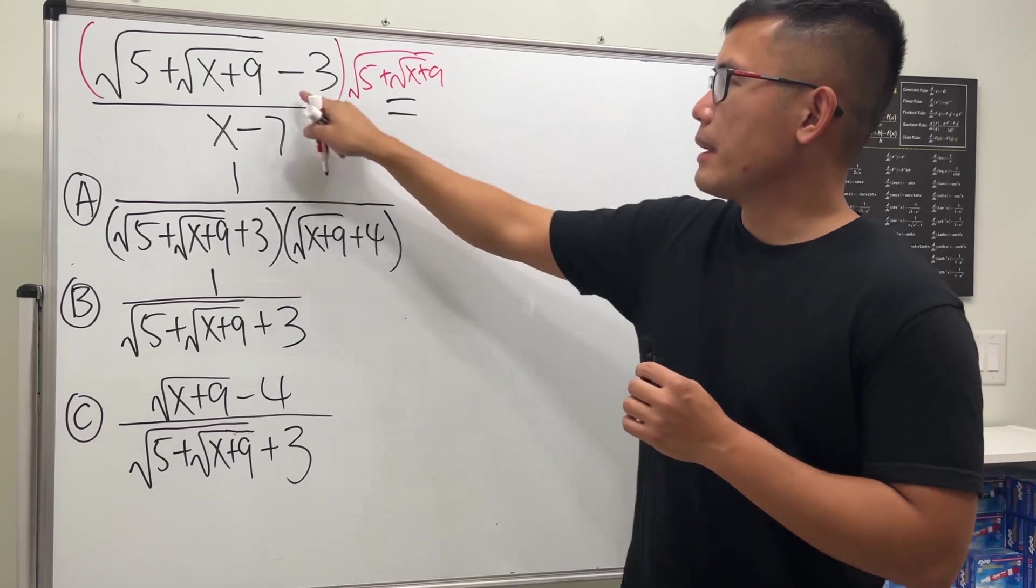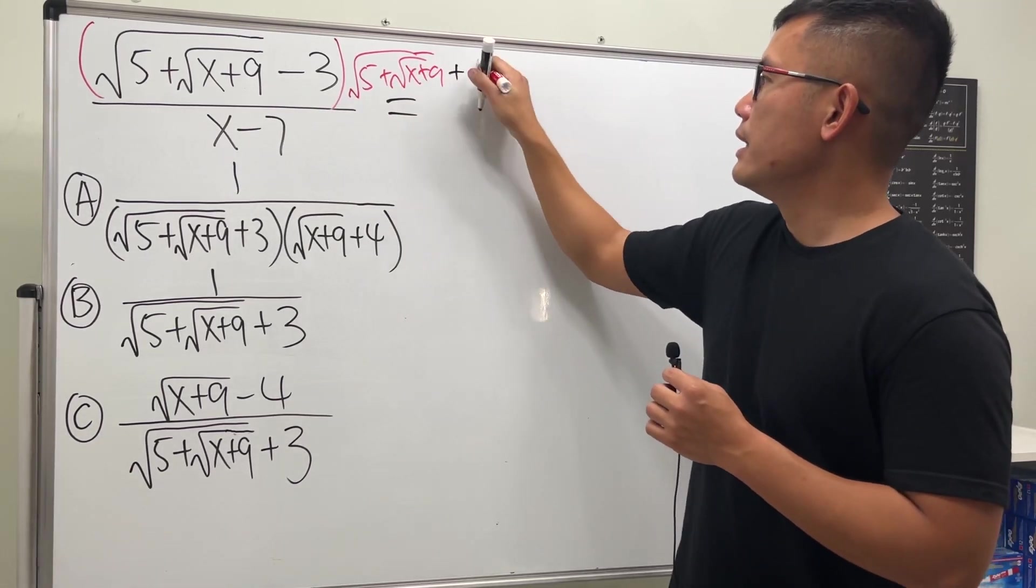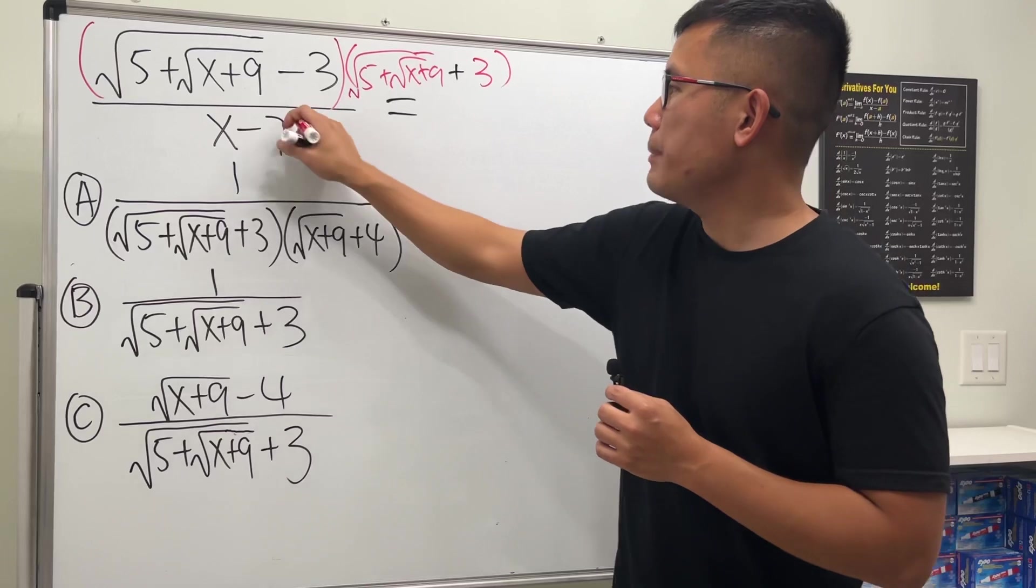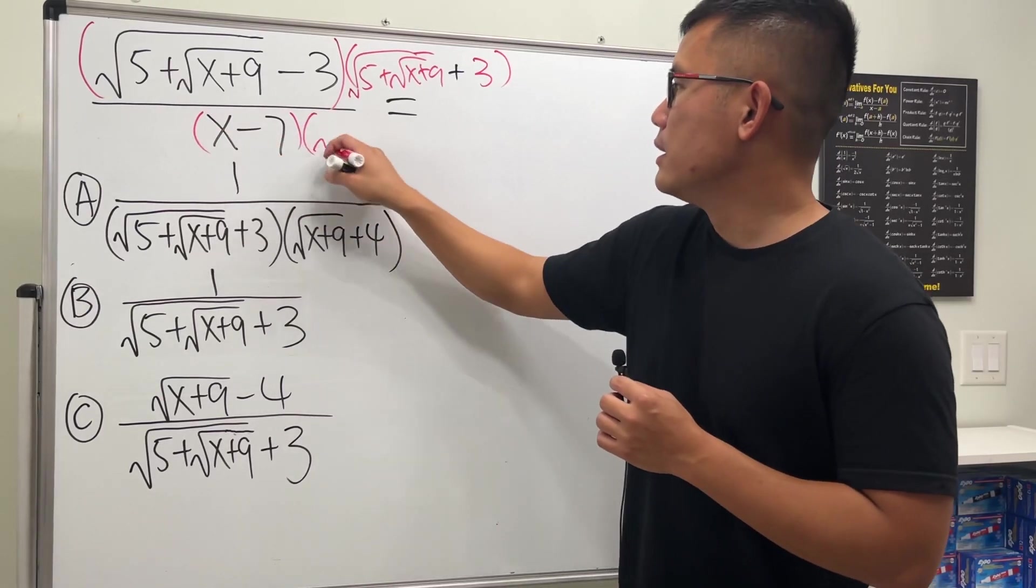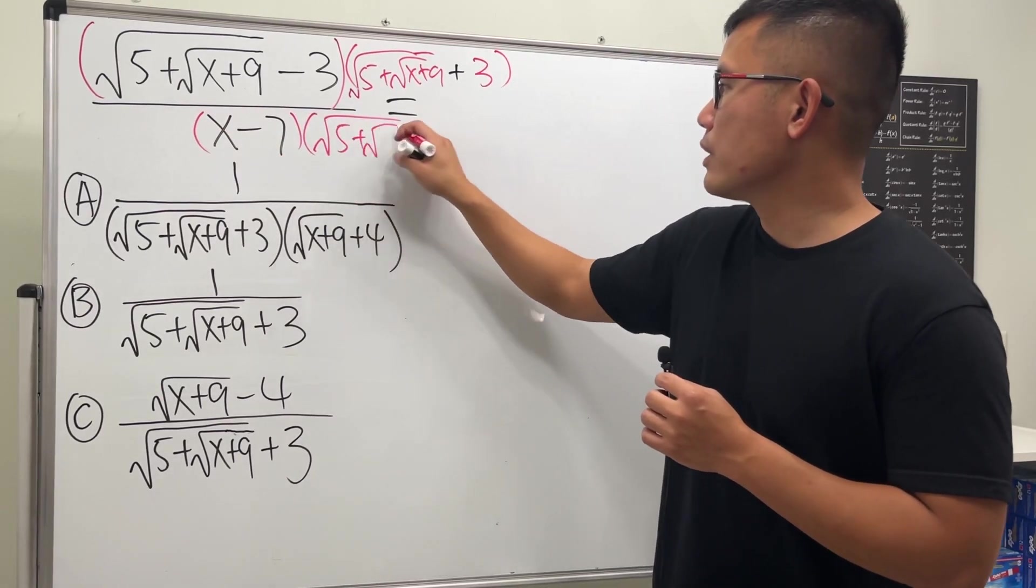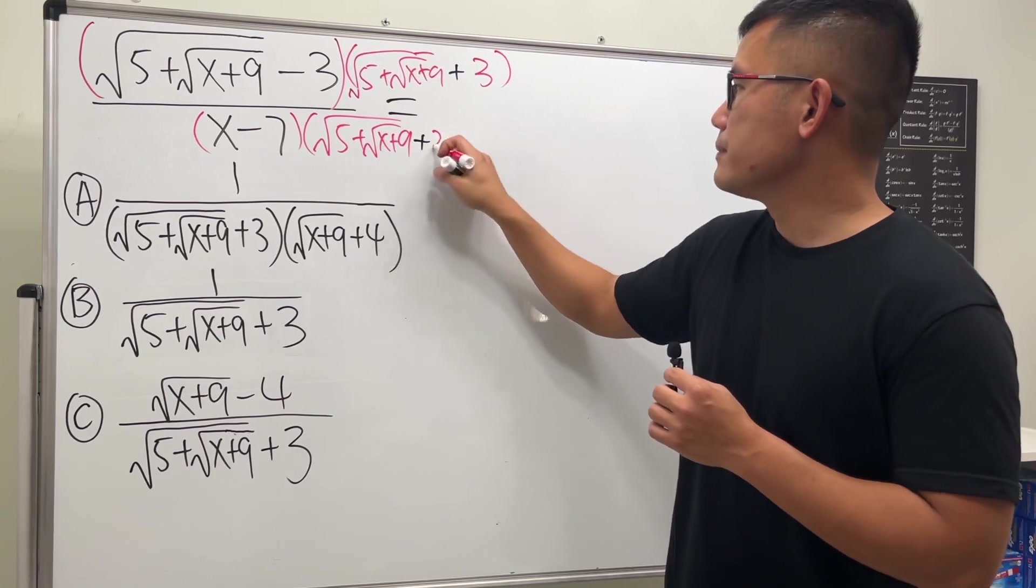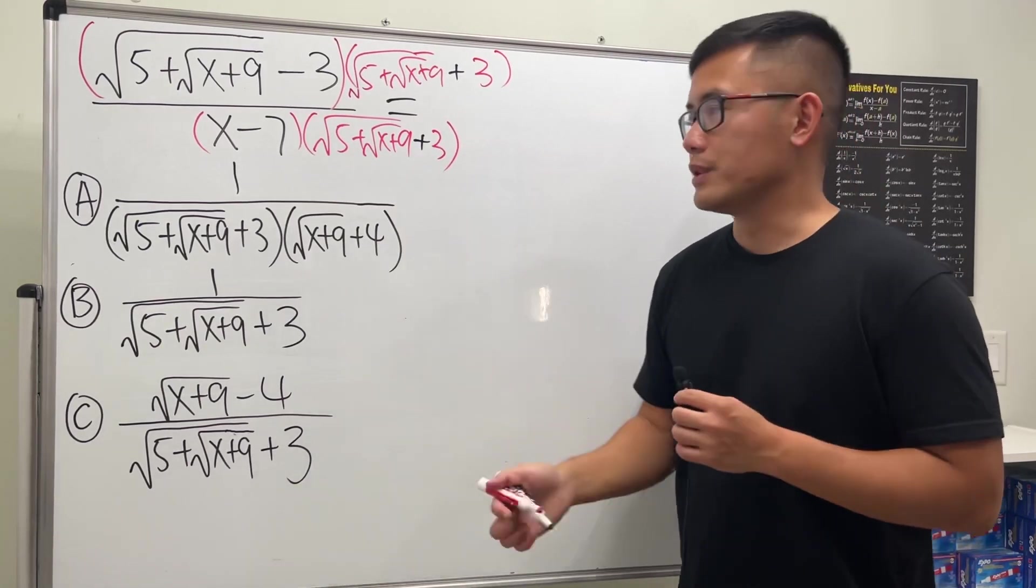This right here stays the same, but we have to change that to a plus, and that's 3. So we do that on the top, and of course we'll do that on the bottom: square root of 5 plus square root of x+9, and then plus 3. We'll see how it goes.